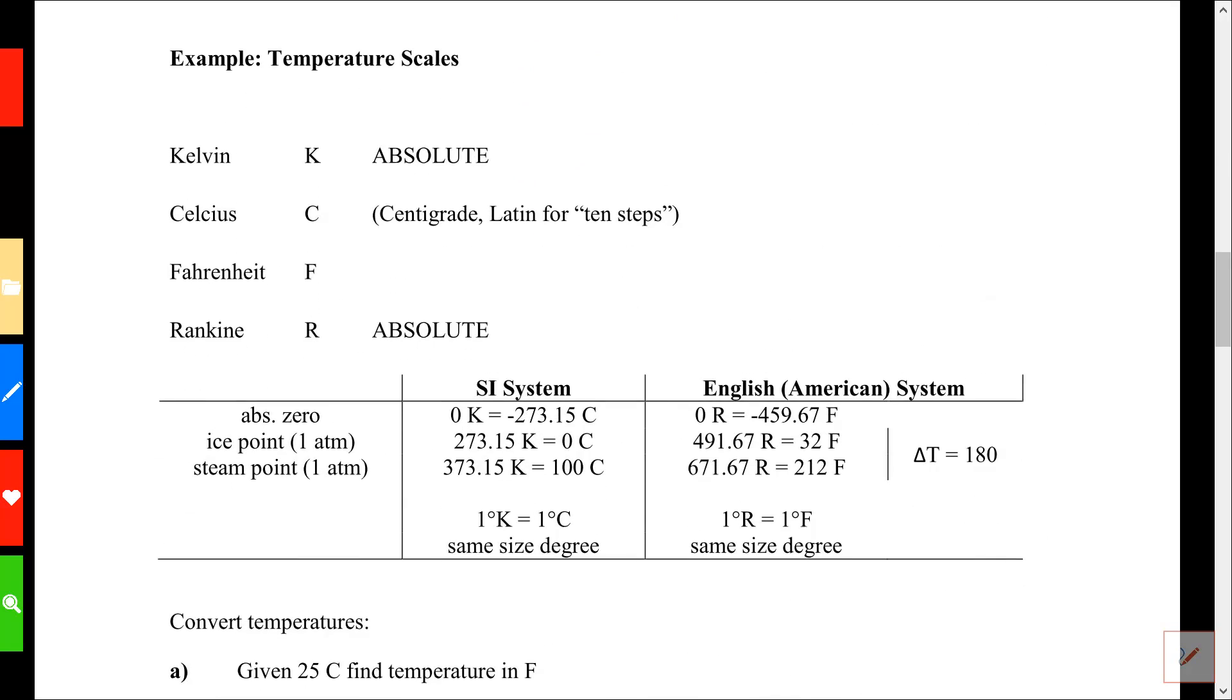There are four temperature scales of interest in thermodynamics. There's Kelvin, which is an absolute scale, Celsius and Fahrenheit, which are not absolute scales. They have a different reference point. And Rankine, which is an absolute scale.